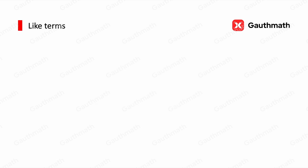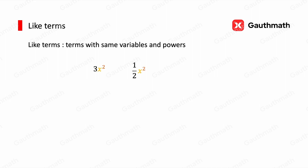First, let's introduce like terms. Like terms are terms with the same variables and powers. For example, if we have 3x squared and 1/2 x squared — both have x as their variable and 2 as their power, so these two terms are like terms.